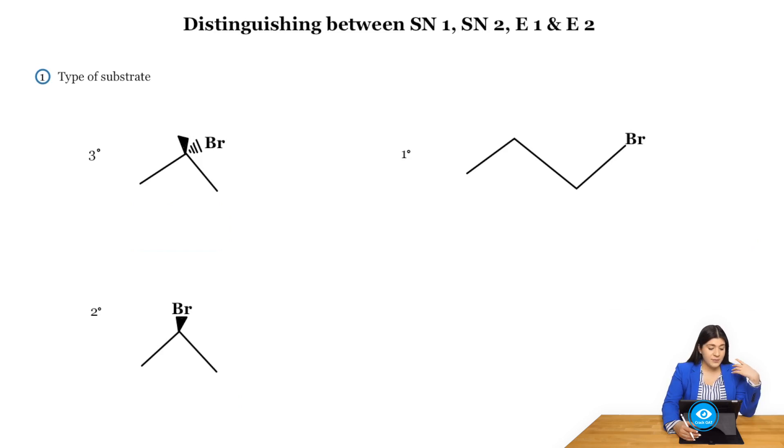Let's start off with something being tertiary. If it's a tertiary substrate, I can identify whether this is SN1 or SN2. Remember, SN2 does not favor a tertiary substrate, so I can instantly tell this would only be SN1, never SN2.